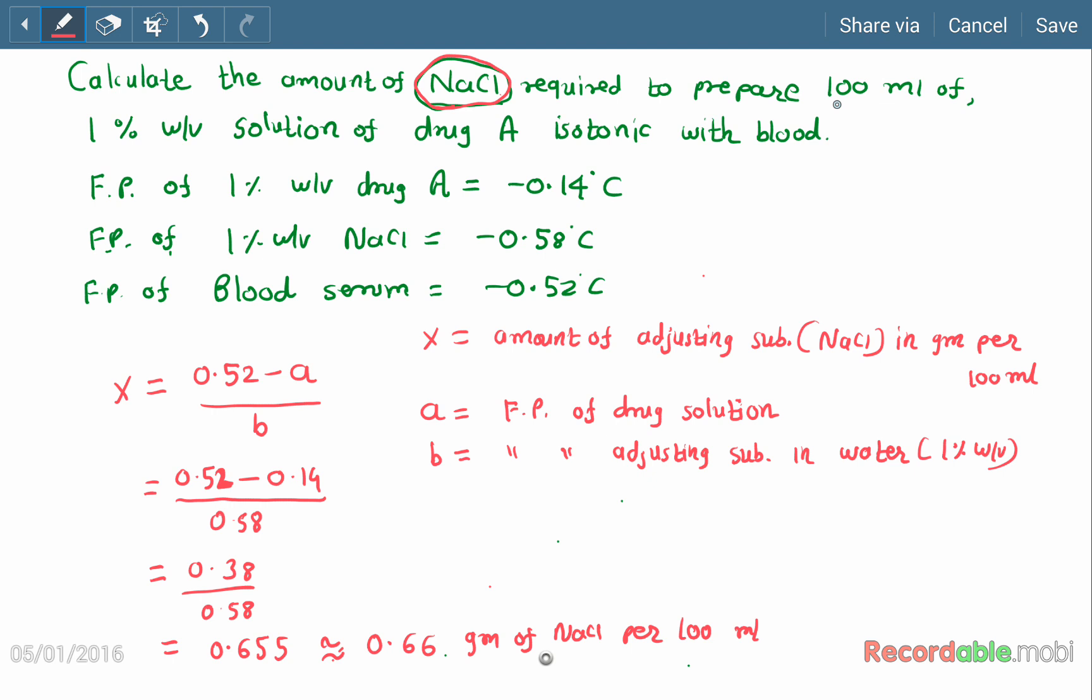Here we have to prepare 100 ml, so we will add 0.66 grams of sodium chloride in the drug A solution and the freezing point will come nearby to the blood, and we can say that our solution is isotonic with blood.